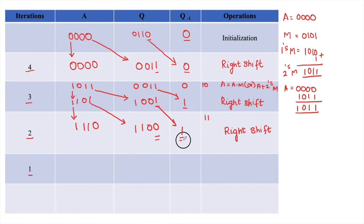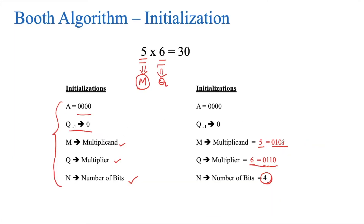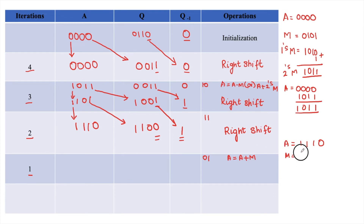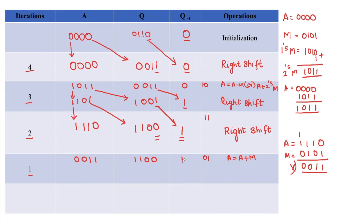We check Q0 and Q-1 again: they are 0 and 1. When Q0 and Q-1 are 0 and 1, we perform A = A plus M. The current A register holds 1110. M is 0101. Adding these: 1110 plus 0101. We get a carry, which we discard, giving 00011 in the result. We write the new A as 0011. Q remains 1100 and Q-1 is 1. After performing A = A plus M, we go for an arithmetic right shift.